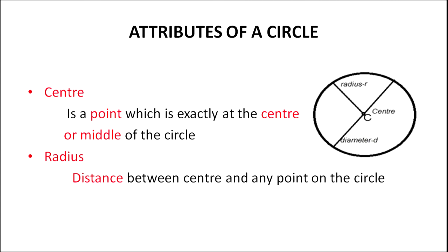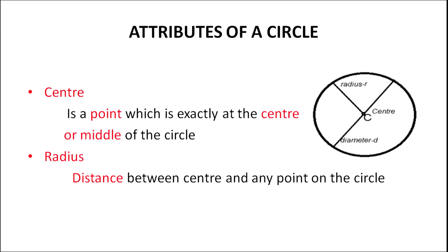Now I will deal with certain attributes of a circle. The first attribute is center. Center can be thought of as a point which is exactly at the middle of the circle. The center always comes in the middle of the circle, and for convenience, since the word center begins with the letter C, capital C can be used to mark the center. The second important attribute is radius. Because the circle consists of numerous points, if we draw line segments from the center to any point on the circle, we get equal measures, and that distance between the center and any point on the circle is called radius. Every circle will have a center and a radius.